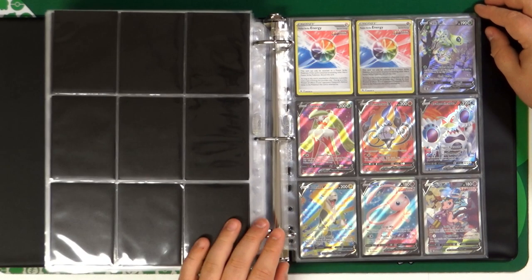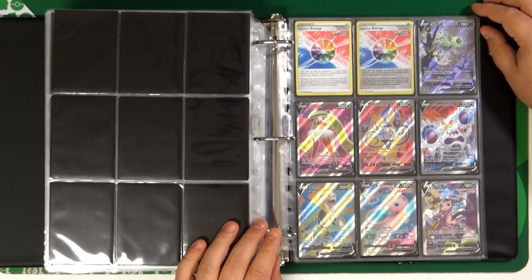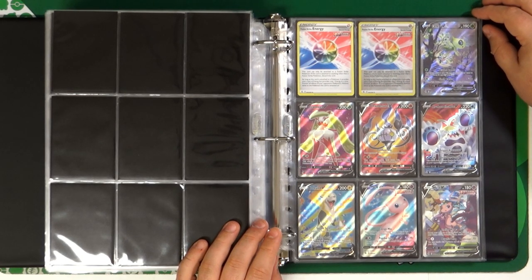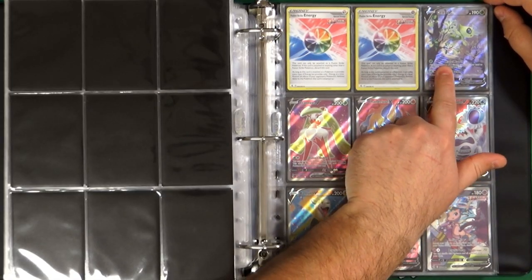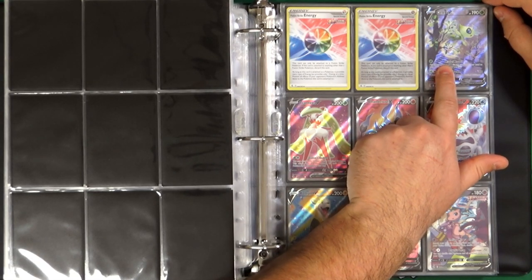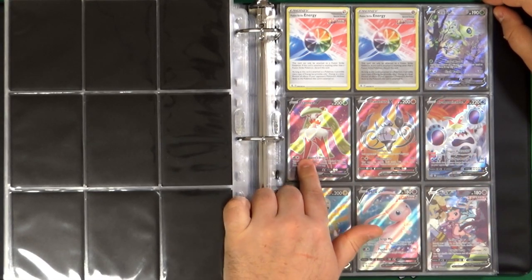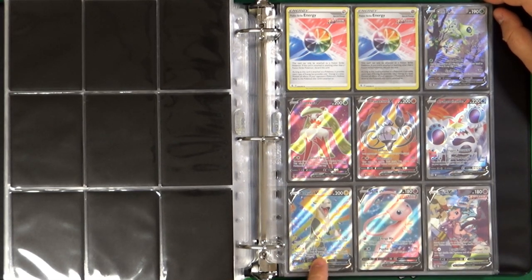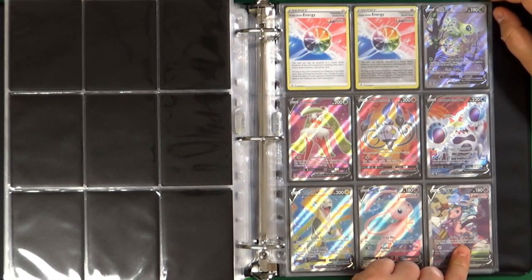And here we arrive to the most interesting part. The Full Arts. We start with Celebi, that was a promo card of Jet-Black. Tsareena, Chandelure, Crabominable, Boltund, Mew, and Mew Alt Art.